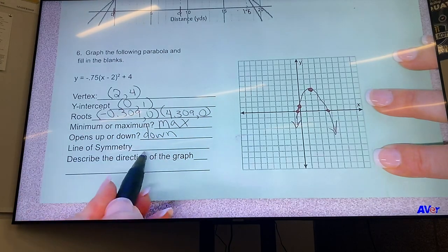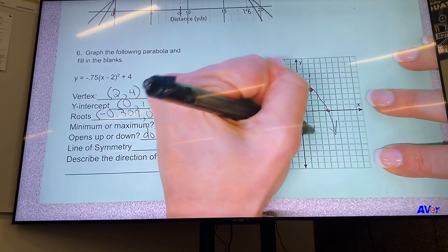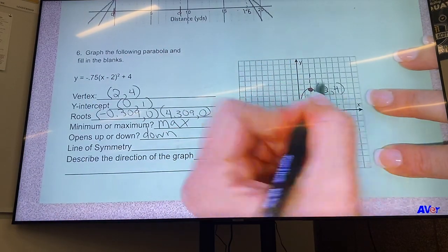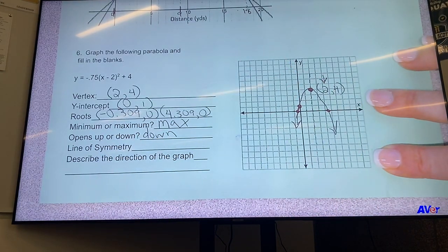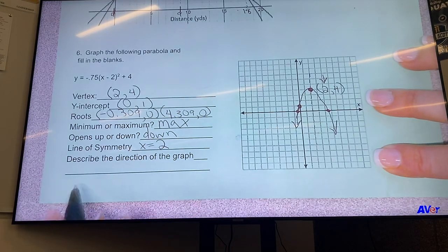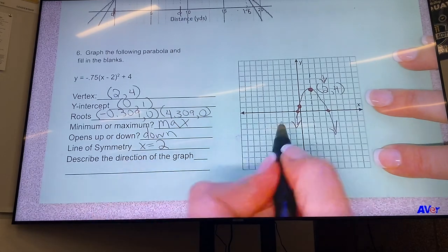And the line of symmetry - remember that goes straight through the middle, straight through the vertex - and we said the vertex is (2, 4), so whatever x is in the vertex, that is your line of symmetry. So x equals 2. And then describe the direction of the graph. This can be interpreted a lot of different ways. What I'm saying is from when you look at it going from left to right.